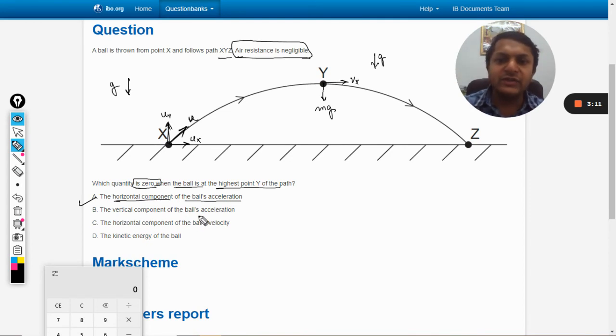What about B, the vertical component of the ball's acceleration? Not at all - the acceleration is gravity which is vertical. Horizontal component of ball's velocity? No, it is also not zero. This is the horizontal and it cannot be zero. Kinetic energy? Obviously half mv square is not zero.